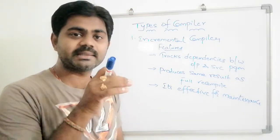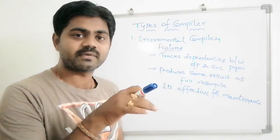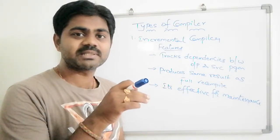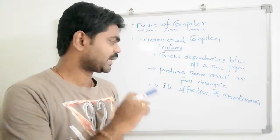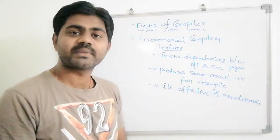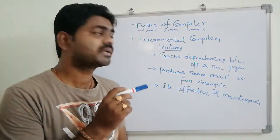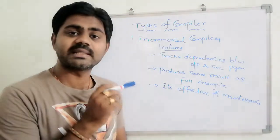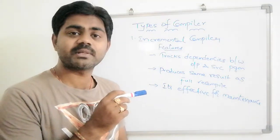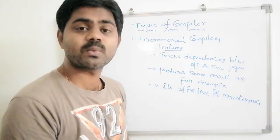The last feature is that it is very effective for maintenance, because we are not touching the entire source program — we are only checking the part which needs to be modified, executing that, and it produces the same result. So this is the incremental compiler. The next, and most important one, is the cross compiler.